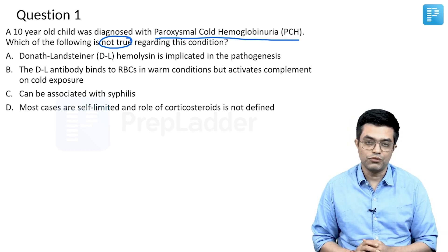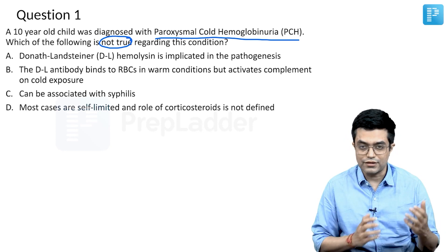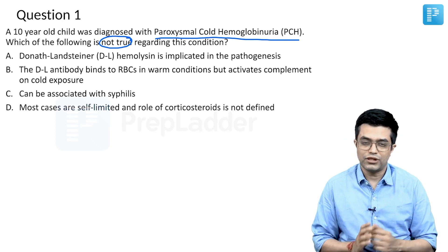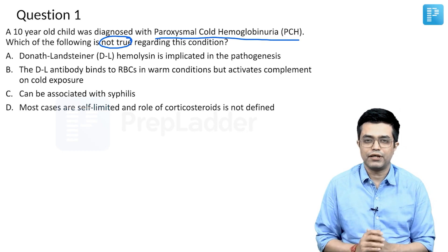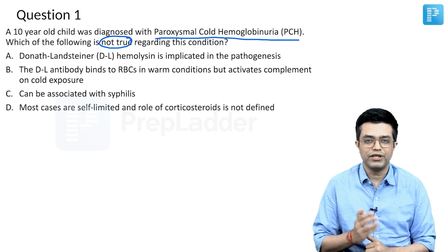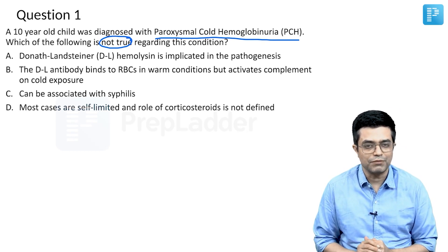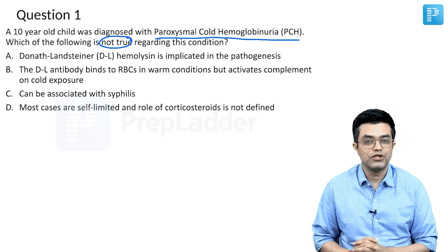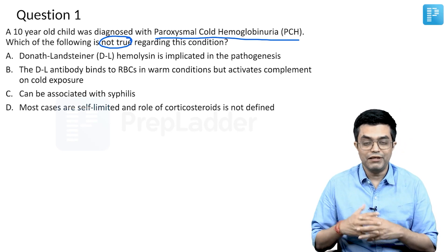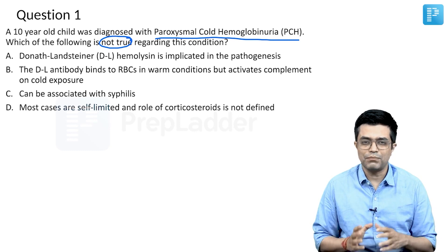Earlier, syphilis — both congenital and acquired — was one of the common risk factors associated with PCH. Now we know that viral infections, including non-specific respiratory and GI infections, can sometimes precipitate PCH. Which exact group of children will manifest PCH is still not clearly understood, although some minor risk groups have been defined.